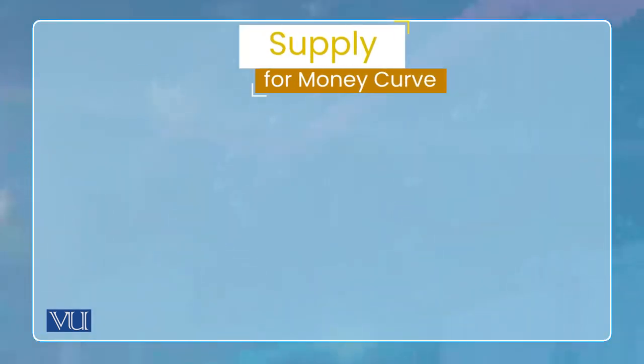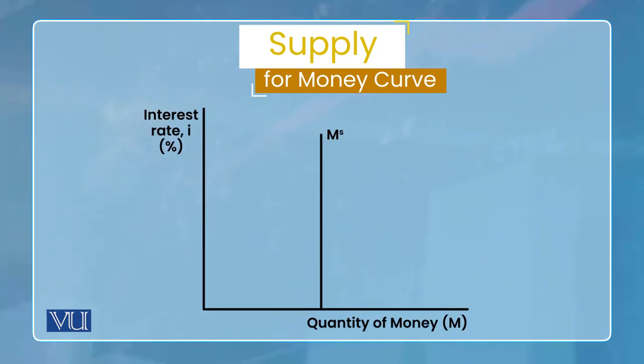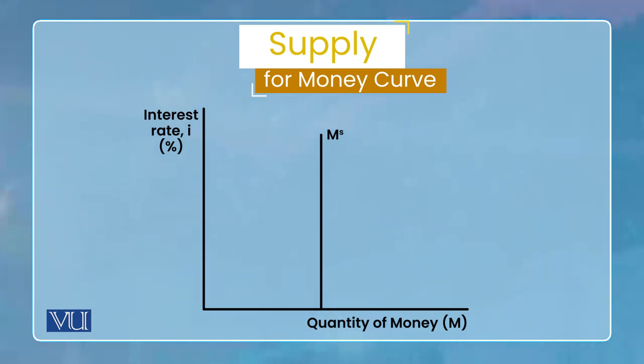Money supply में velocity of money और money multiplier का role होता है। लेकिन जब हम money market study करते हैं तो assume कर लेते हैं कि money supply exogenous है — यानी interest rate से effect नहीं होती। अगर हम assume करें कि money is controlled by central bank, then we can assume supply is exogenous. That's why the money supply curve is vertical.